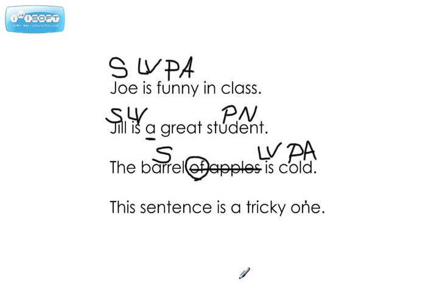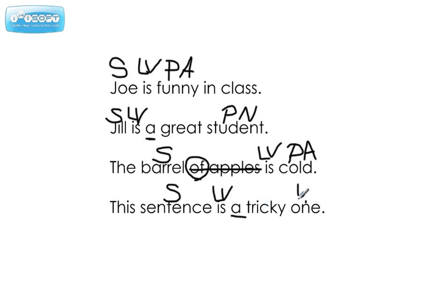Finally, this sentence is a tricky one. We have 'is' again — you're going to see it a lot. Who or what is? That would be 'the sentence.' The sentence is what? Look — we have 'a.' You guys are probably all picking 'tricky' right now, but it's not tricky. The sentence is a tricky one — and that's a PN. We have this 'a' here letting us know that 'one' is a predicate noun.